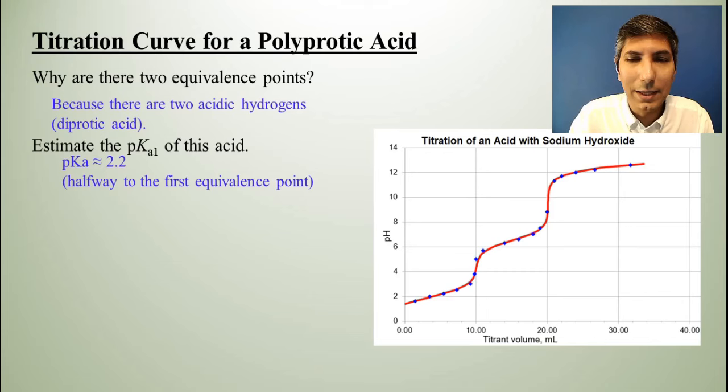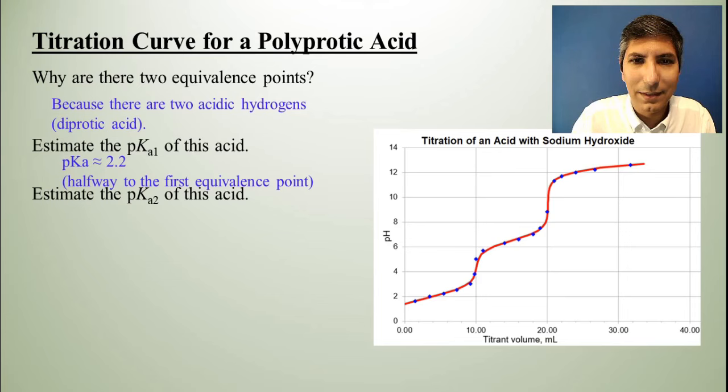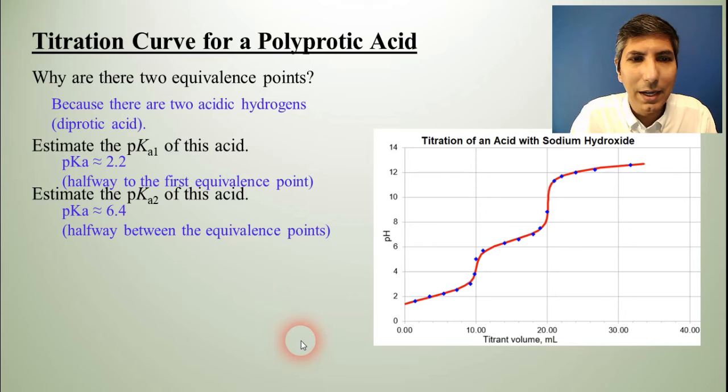Now let's estimate the pKa2 of this acid. Now, once again, that's going to be the halfway point, but this time it's the halfway point between the first equivalence point and the second equivalence point. So that's going to be right around here somewhere. And so if we move over to the left, it looks like it's somewhere around maybe 6.4. So it's halfway between the two equivalence points.